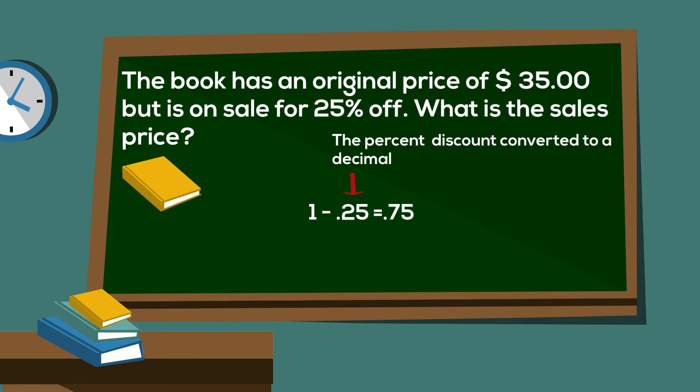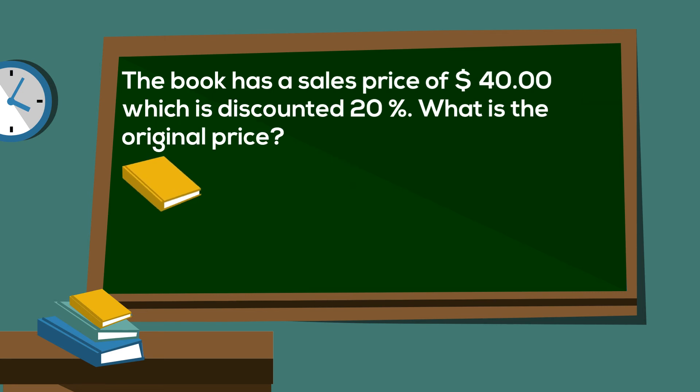Again, take 1 minus the percentage discount converted to a decimal, which is 0.25, and 1 minus 0.25 equals 0.75. Then multiply 35 times 0.75, and that gives you $26.25.